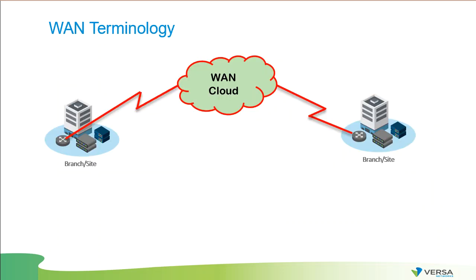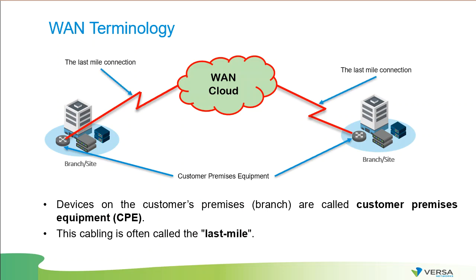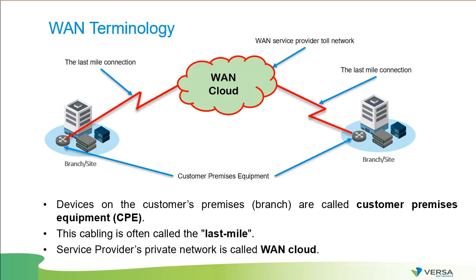Let's talk about WAN terminology. Equipment that is located on the customer location that helps us connect to the WAN is called customer premises equipment. The cabling that is provided by the service provider to connect to their WAN network is called last mile. And the service provider's network is called WAN cloud, because the connection to the network consisting of routers or switches that we don't know about — it's just a cloud for us.